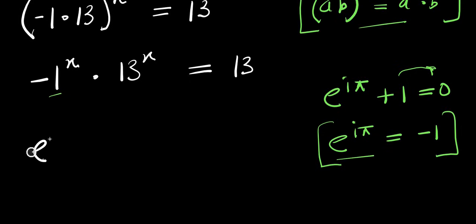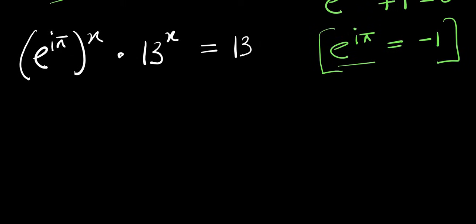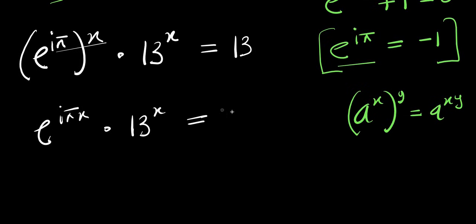So we have e to the power of i times pi, and this is raised to the power of x, times 13 to the power of x equals 13. From here, we multiply and have e to the power of i times pi times x, times 13 to the power of x equals 13.